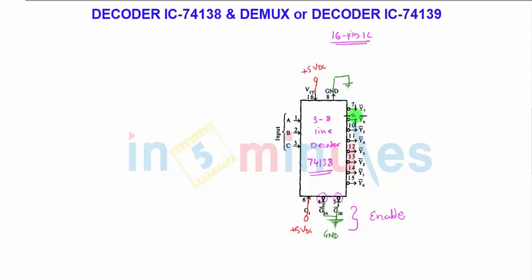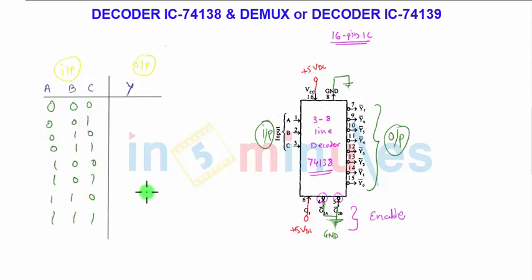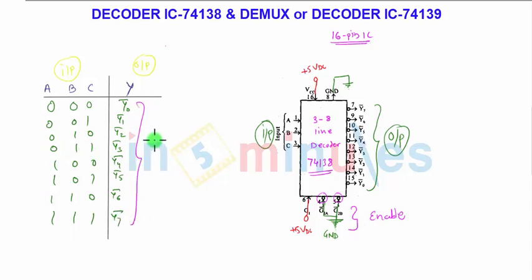Pin 8 is connected to ground. Pins 7, 9, 10, 11, 12, 13, 14, and 15 are the eight outputs, and the outputs are also bubbled outputs — this is the output section. There are three inputs, A, B, and C, treating A as MSB, giving eight combinations. For these eight combinations we get the respective decoded outputs: Y0-bar, Y1-bar, Y2-bar through Y7-bar, which are logic low or bubbled outputs.